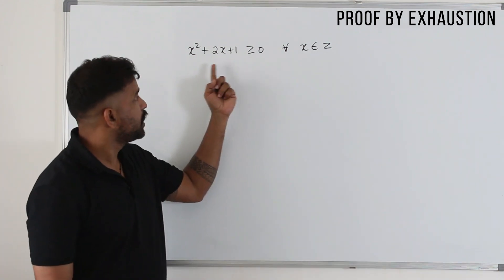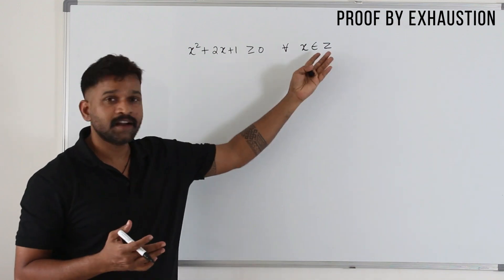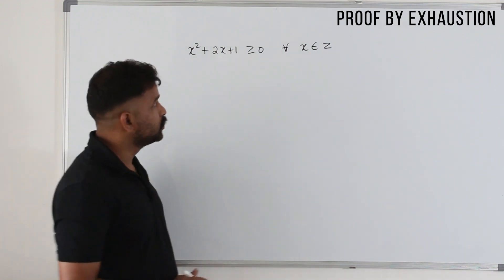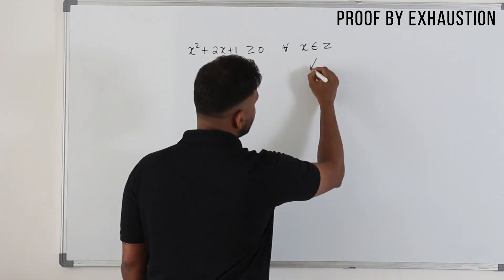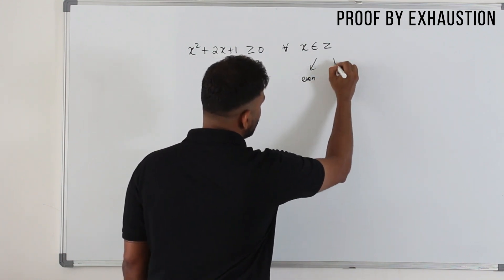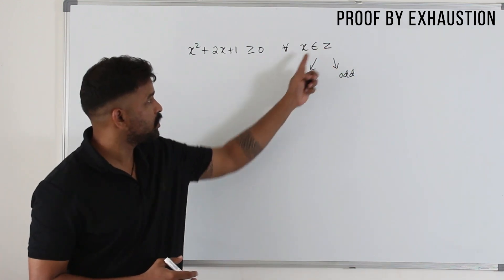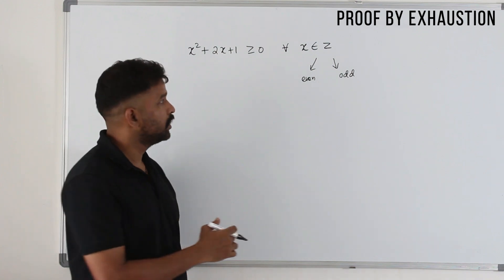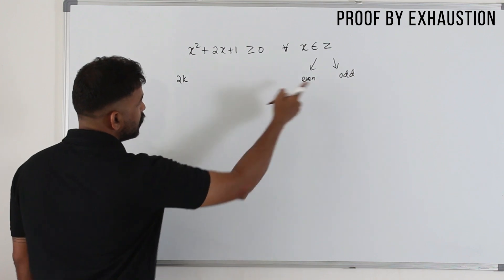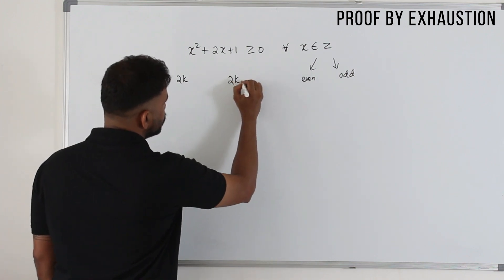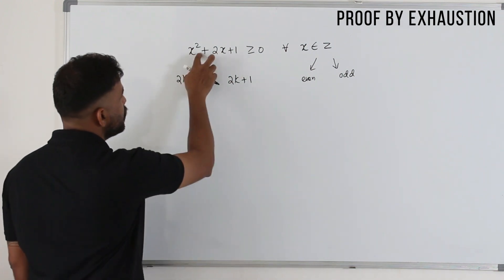So we need to prove a statement for all integers — that's highly impossible since there are infinite numbers. What we can do is divide these numbers into two categories: even and odd. Even numbers are always in the form 2k, and odd numbers are in the form 2k + 1. We discussed this before. So substitute into the expression.